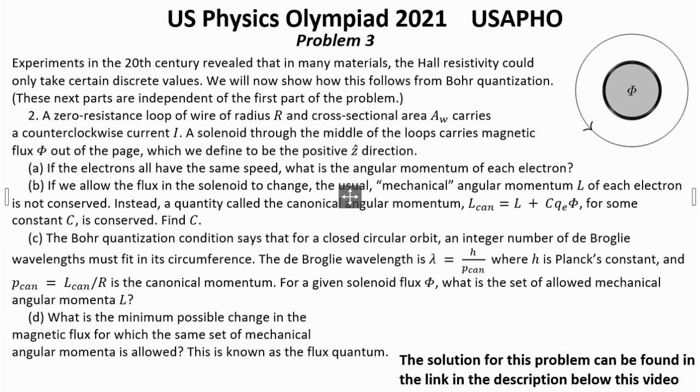Question C: The Bohr quantization condition says that for a closed circular orbit, an integer number of de Broglie wavelengths must fit in the circumference. The de Broglie wavelength is lambda equals H over P_can, where H is Planck's constant and P_can equals L_can over R is the canonical momentum.